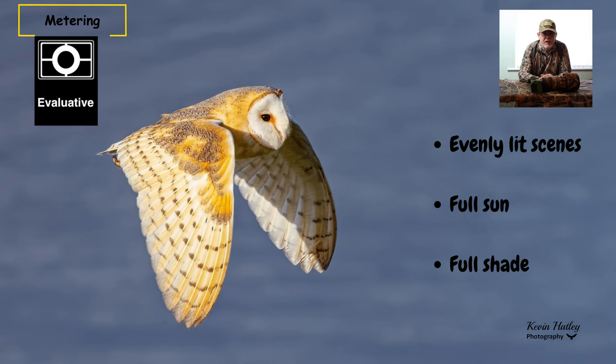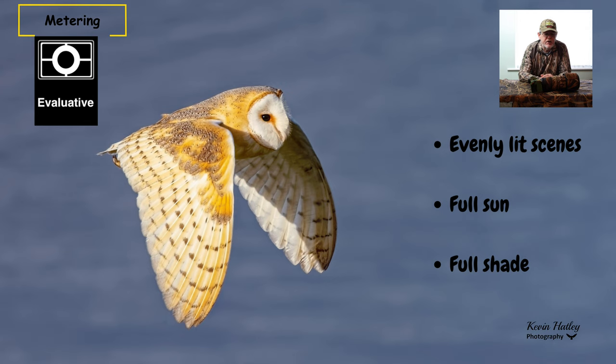So let's look at evaluative metering first. It considers the whole scene, and then it averages out the amount of light to use to expose your image correctly. Evaluative metering is mainly used when you've got evenly lit scenes where the sun's out all day long, or you've got constant shade, and the light is pretty much average all over.